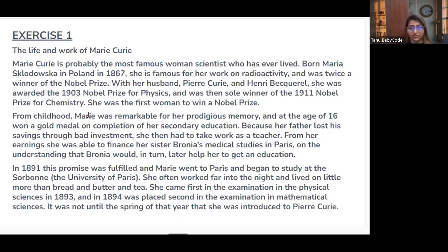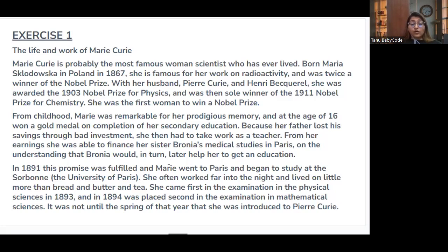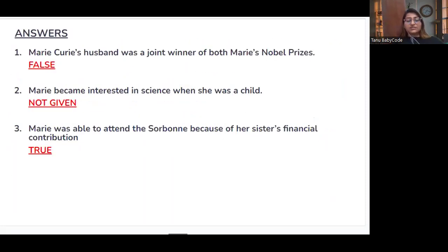For statement three — was Marie able to attend the Sorbonne because of her sister's financial contribution? The passage states: she worked as a teacher, and from her earnings she was able to finance her sister Bronia's medical study in Paris, on the understanding that Bronia would in turn later help her to get an education — and this promise was fulfilled. So yes, Bronia helped her financially to study at the Sorbonne. Statement three is TRUE. The answers are: False, Not Given, and True.